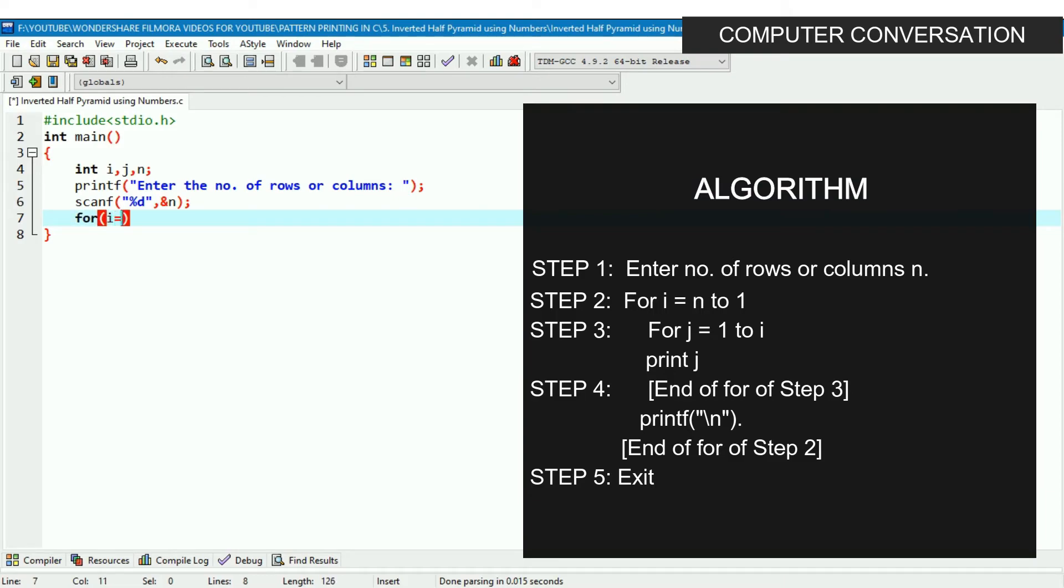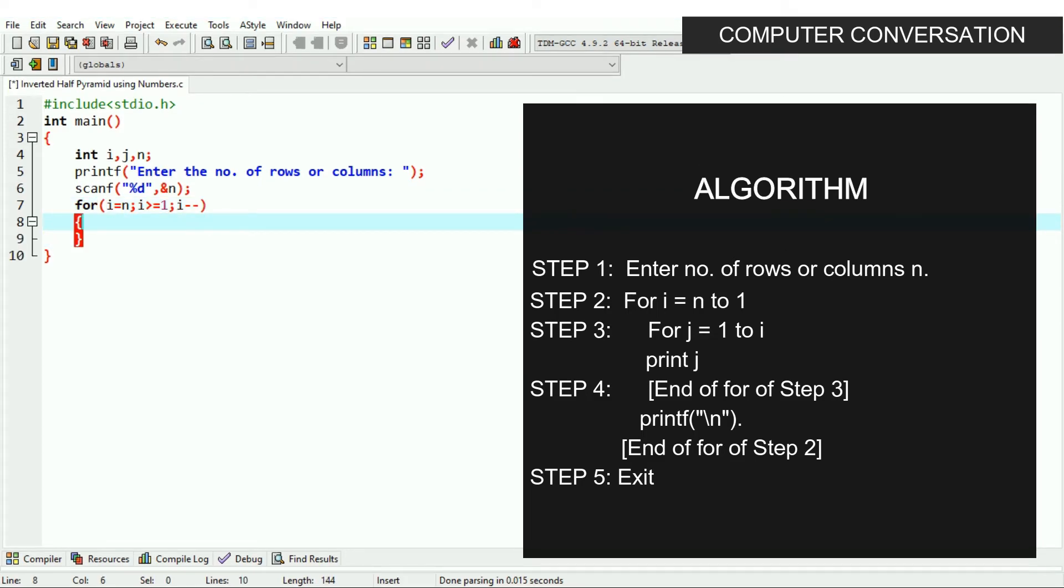Now start the outer loop. Write for i equals n, i greater than equals 1, i minus minus. So the loop will run from n to 1. Open a brace. Now write the inner for loop, that is for j equals 1, j less than equals i, j plus plus. So this loop will run from 1 to i for each iteration of i. And write printf j and give a space for clear distinction of numbers when printed. No need to use braces here as only one statement printf j is to be executed within the loop.